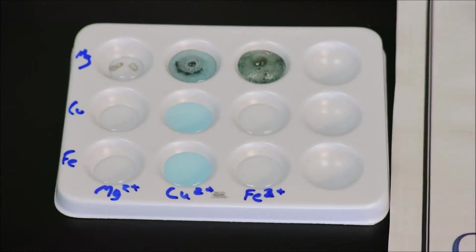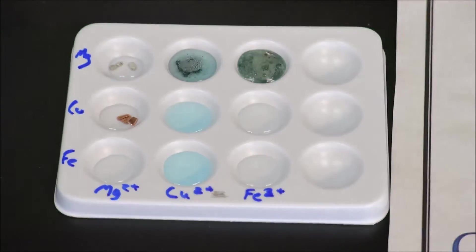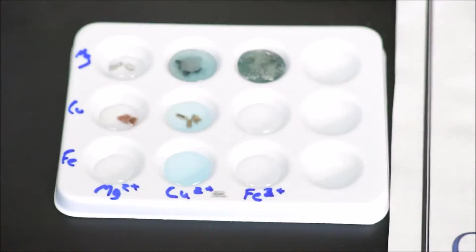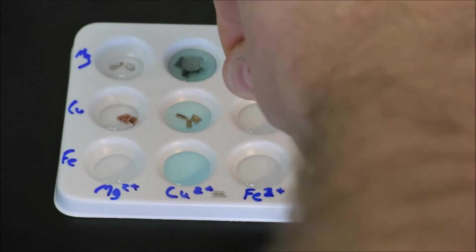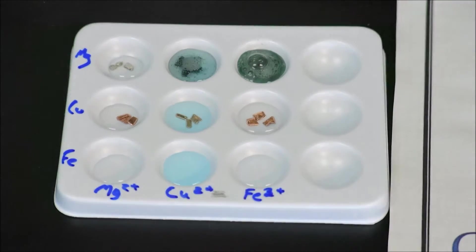Secondly, we'll be testing copper metal. And in this case, we'll place small pieces of copper in each of the three wells. Keeping a controlled variable of three pieces for each well.